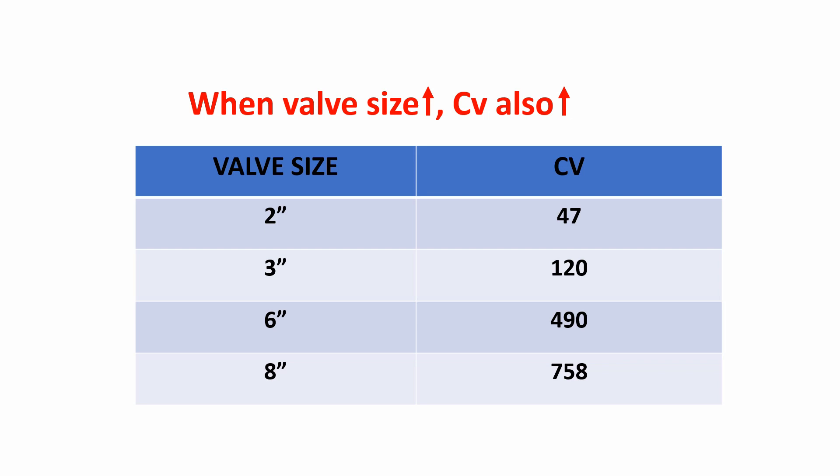You could see the three inch valve size has 120 Cv, the six inch valve size has 490 Cv, and eight inch valve size has 750 Cv. So when the valve size increases, the Cv also increases, that's directly proportional.